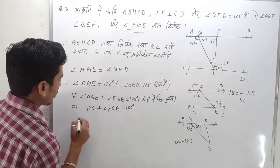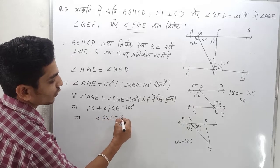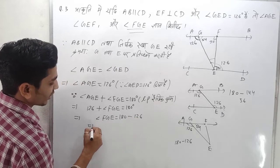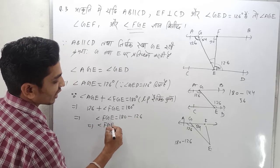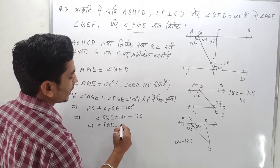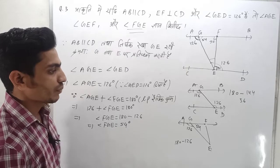AGE is 126, so 126 plus FGE equals 180 degrees. FGE equals 180 minus 126, which is 54 degrees.